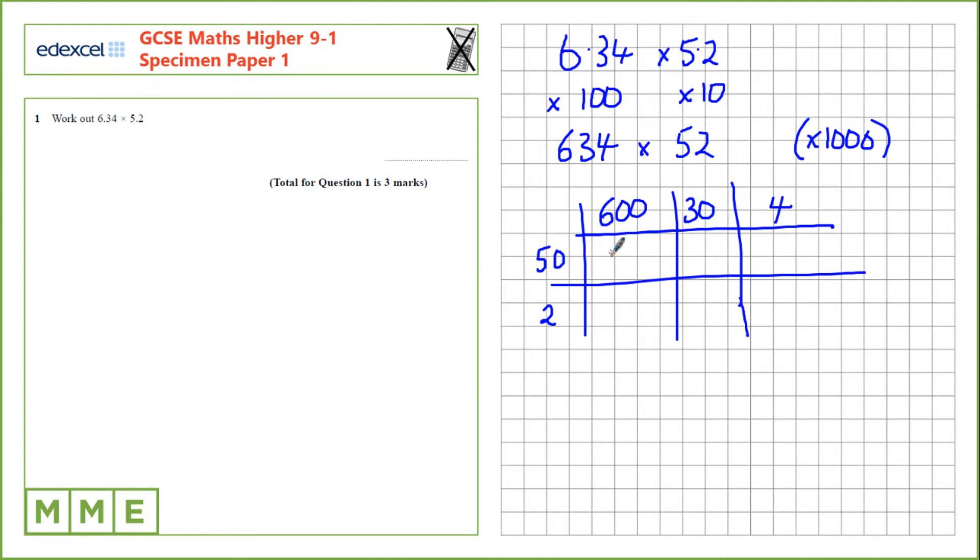50 times 600 is 30,000. 50 times 30 is 1,500. 50 times 4 is 200. 600 times 2 is 1,200. 30 times 2 is 60. 4 times 2 is 8.